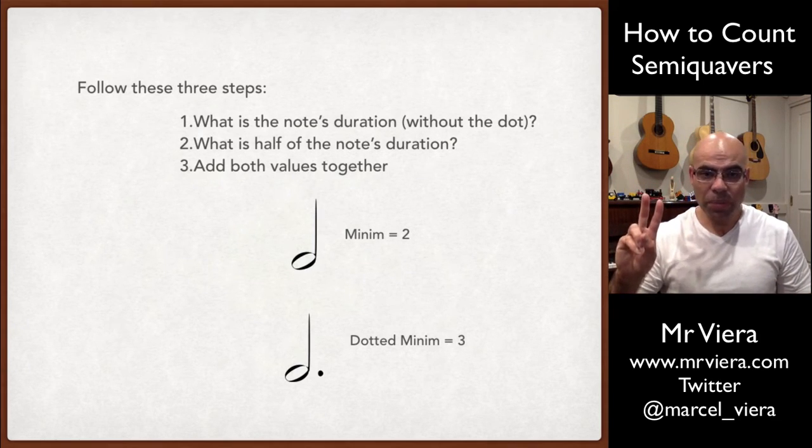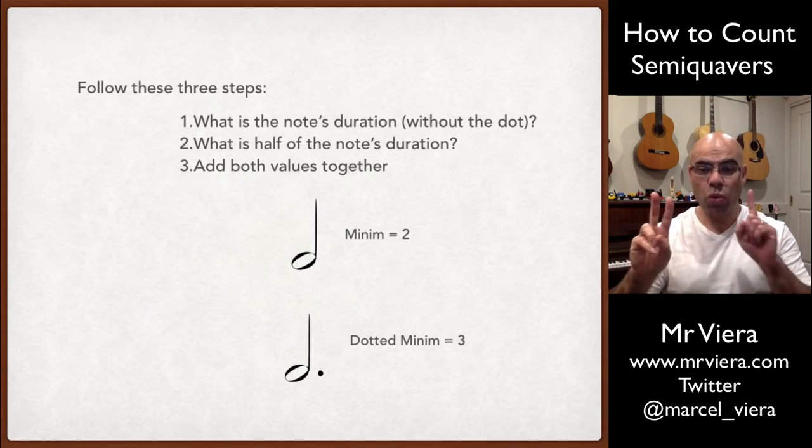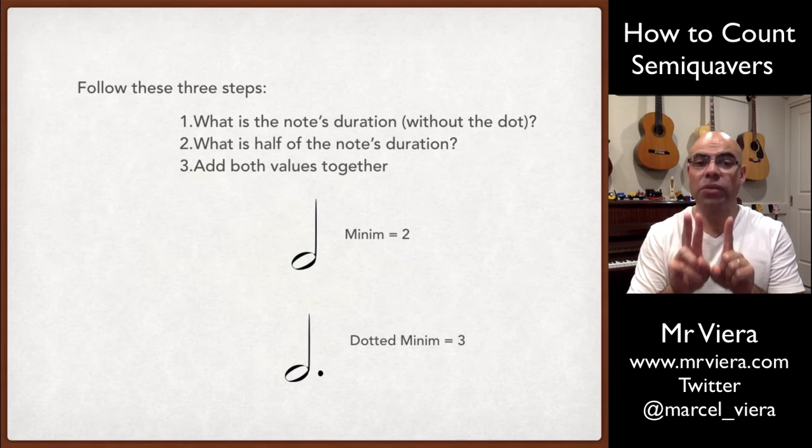It also works with a minim. So if we get a minim, it's worth two. Half of a minim is one. So two plus one, a dotted minim equals three.